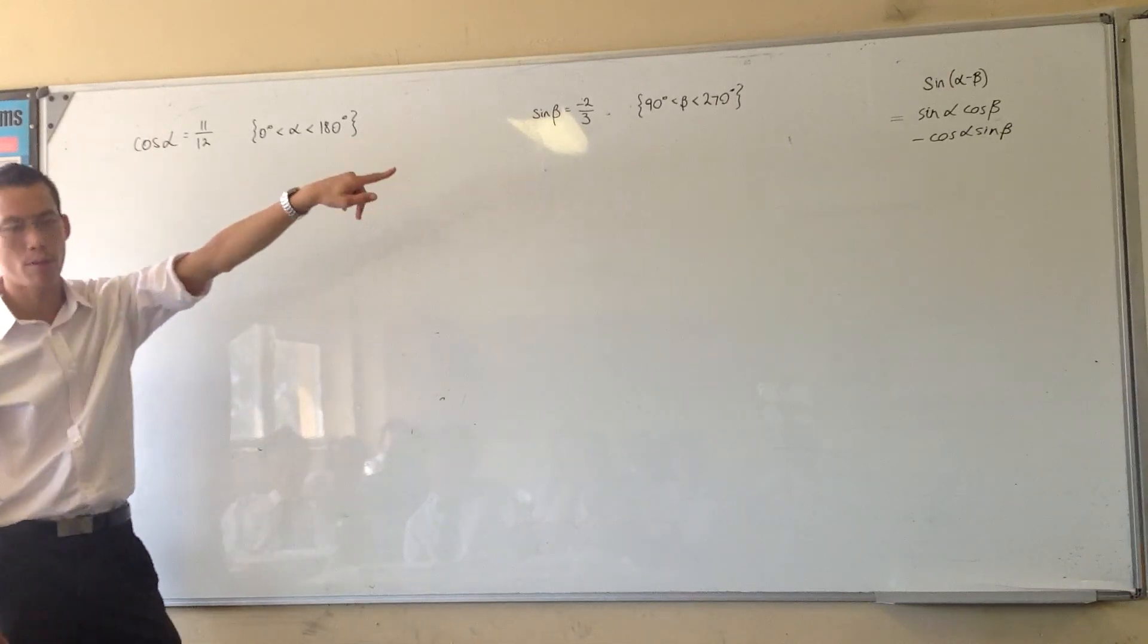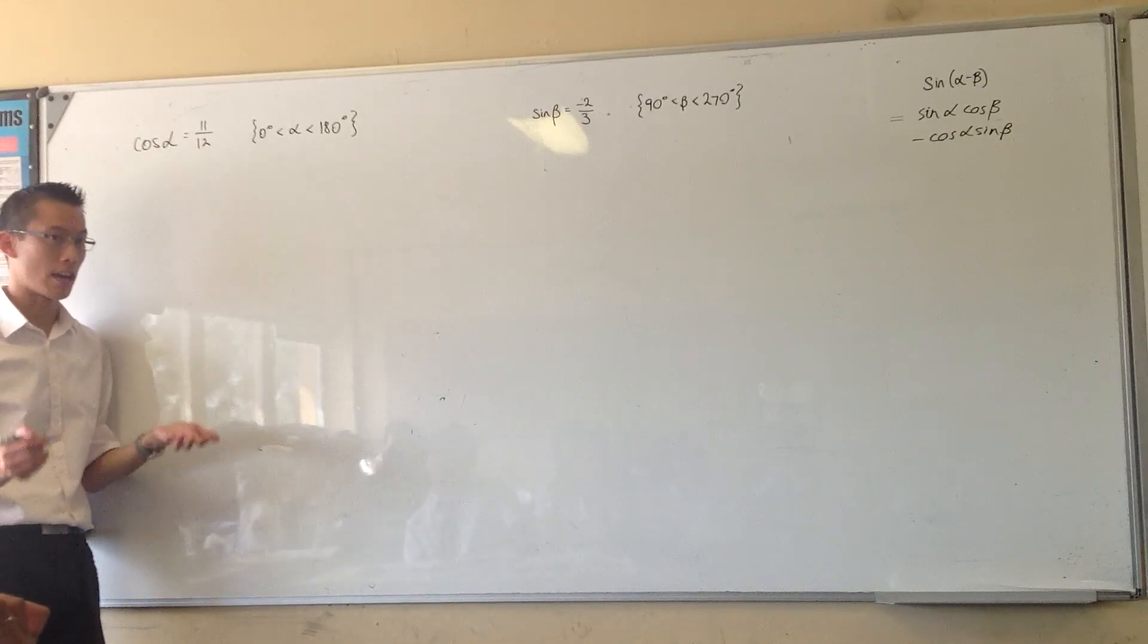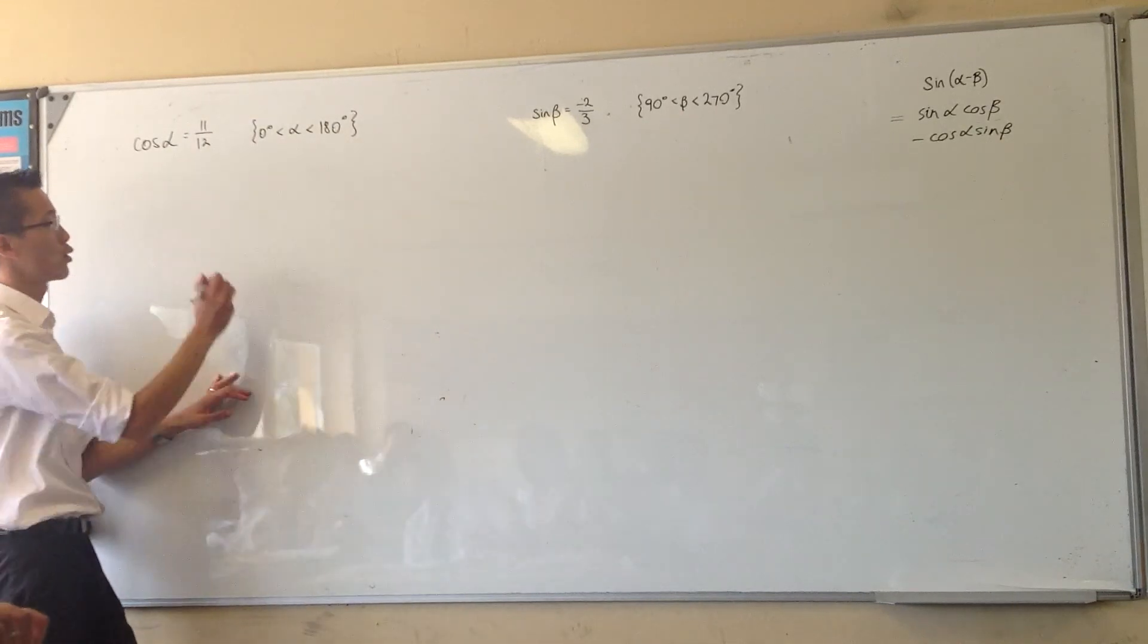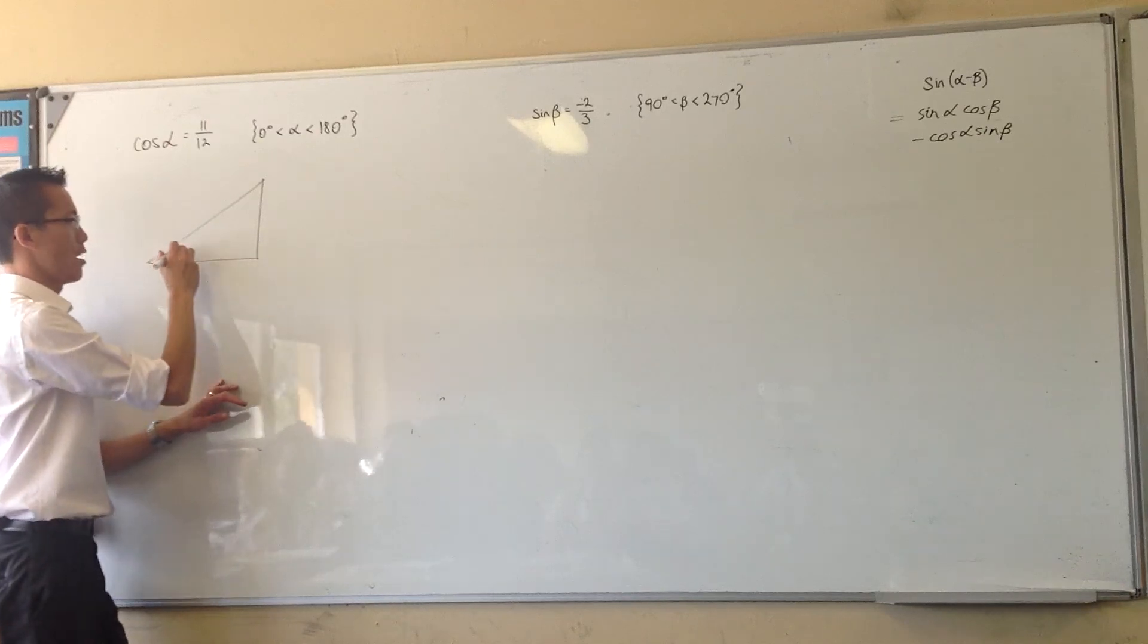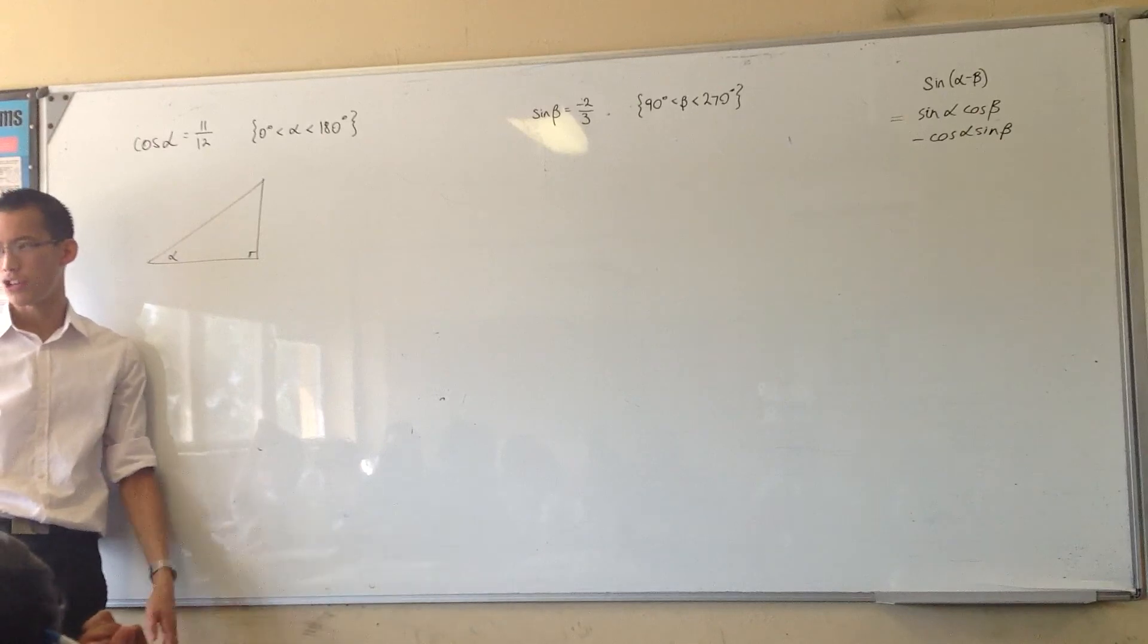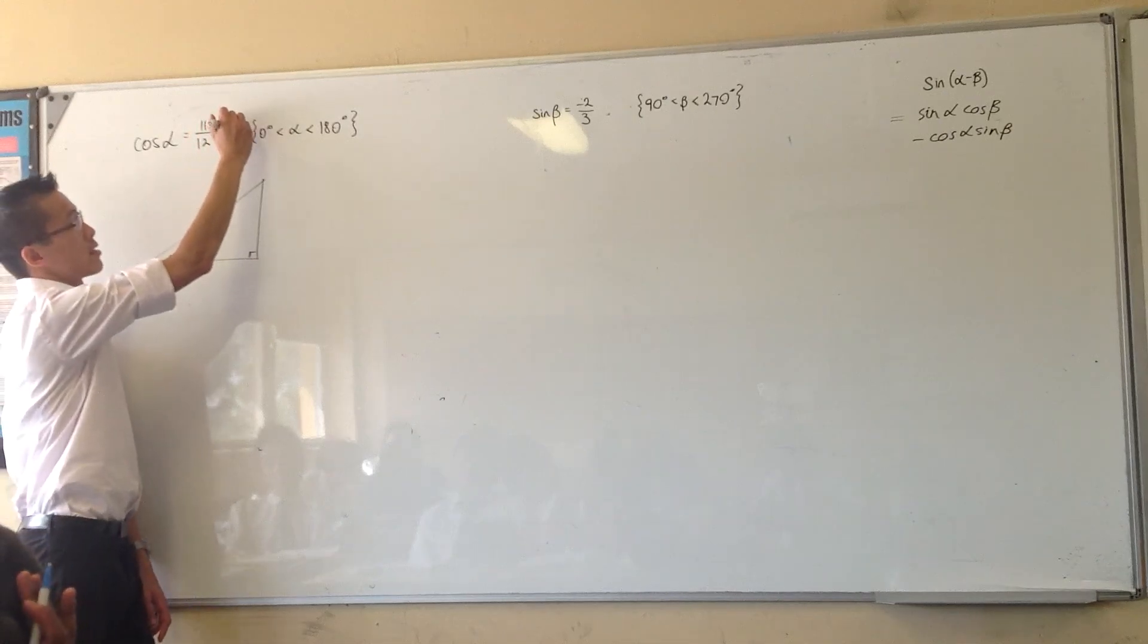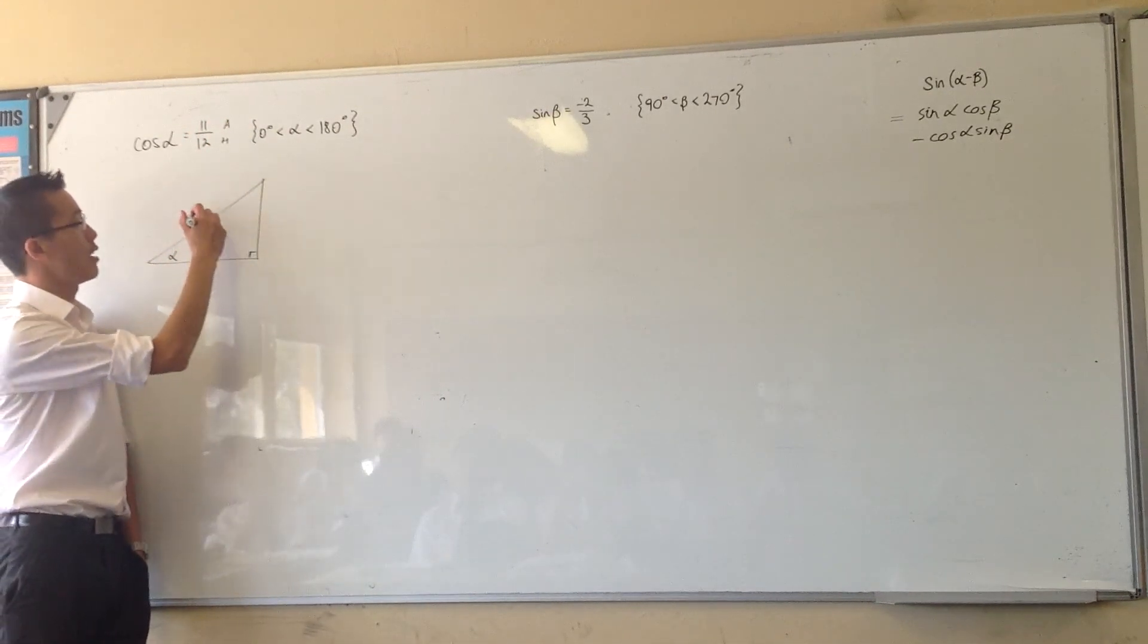So take note of the domain. We're going to talk about that in a second. But basically, you want to think about this as representing an angle in a triangle. So alpha is in a right angle triangle with these ratios of sides. If I draw out—don't worry about scale—put alpha here in a right angle triangle. Cos is which ratio? Adjacent on hypotenuse, right? So this is your adjacent and this is your hypotenuse. So here's 11 and here's 12.